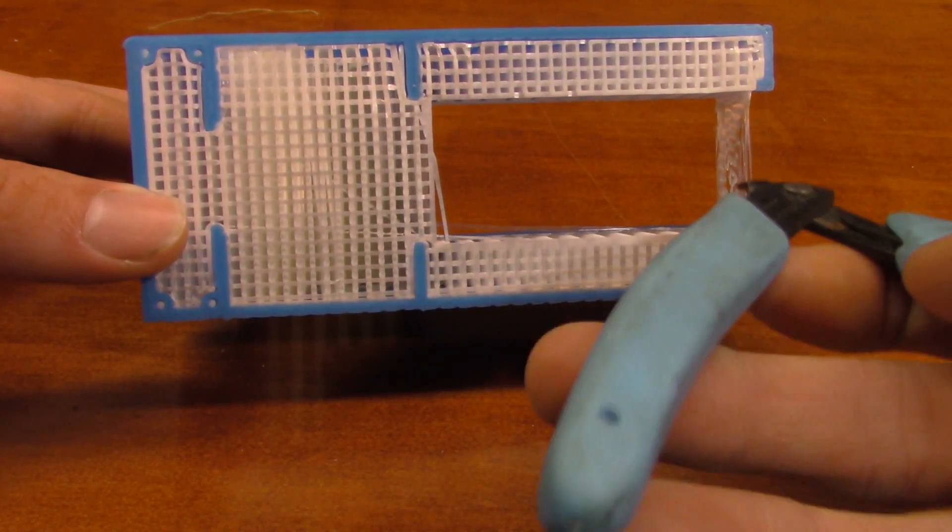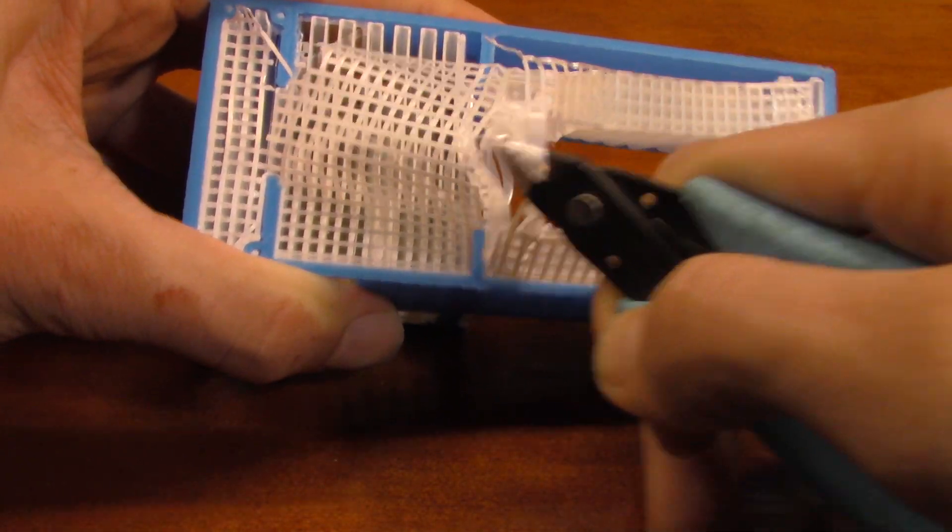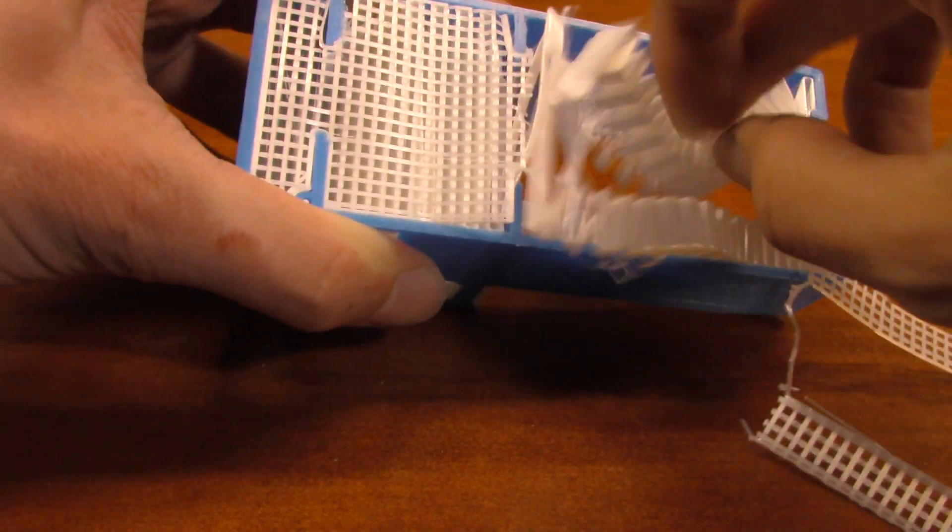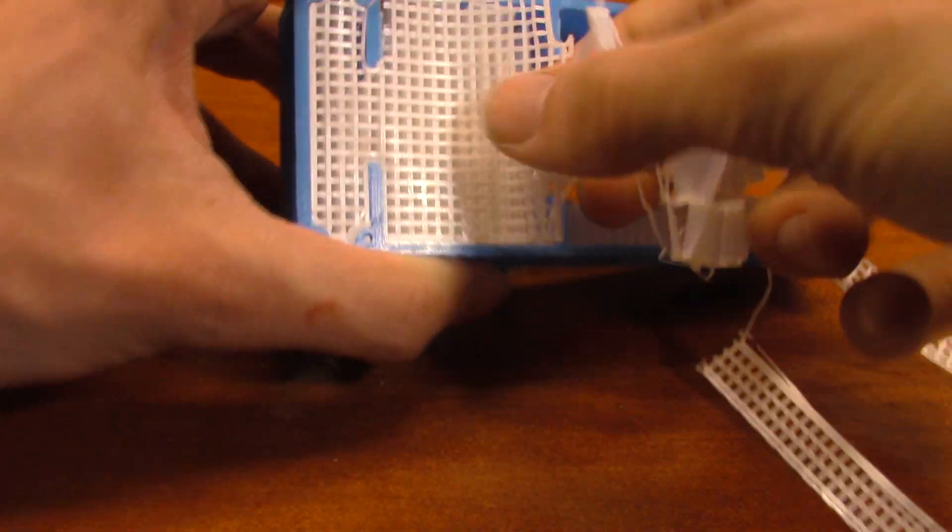Right here you're going to see he's going to start removing that material. As you can see, it breaks away from the sides of the model. You notice you don't see any lines attached to it. If you're used to printing with PLA for support material, you would definitely notice lines where it touches the model.